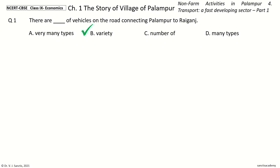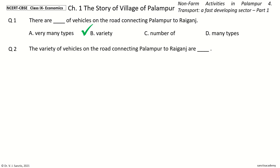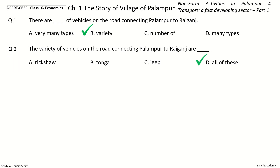Question 2: The variety of vehicles on the road connecting Palampur to Raiganj are dash. The options are: Rickshaw, Tonga, Jeep, All of these. And the answer is All of these. So, the variety of vehicles on the road connecting Palampur to Raiganj are Rickshaw, Tonga, and Jeep.